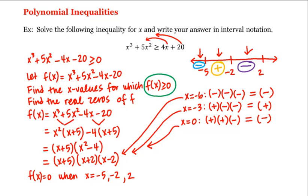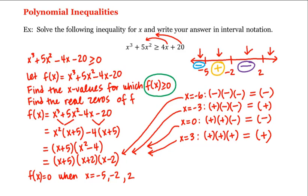For the last interval, we choose x equal to 3. Plugging this into the factored form, we have 3 plus 5, which is positive, times 3 plus 2, which is also positive, times 3 minus 2, which is also positive. Positive times positive times positive is positive. Therefore f is positive in this last interval.